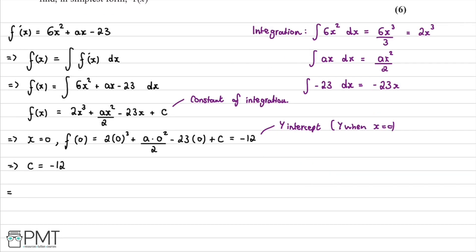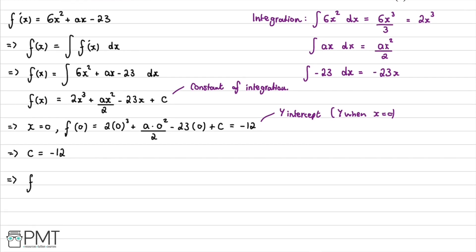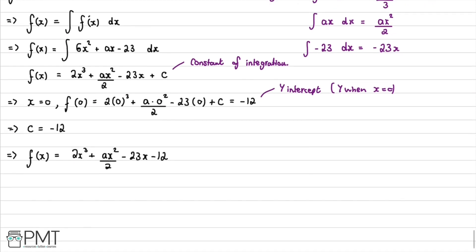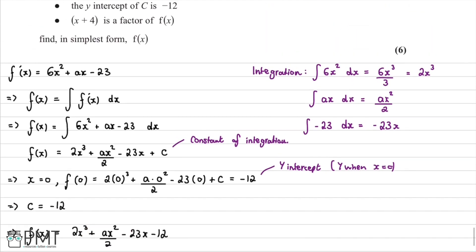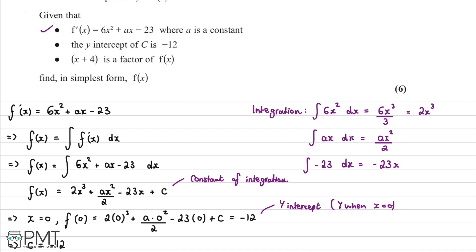Substituting C = -12 back in, we have f(x) = 2x³ + ax²/2 - 23x - 12. This is starting to look good, but we still need to find the value of a. We've used the integration and the y-intercept information, so now we need to use the fact that (x + 4) is a factor of f(x).